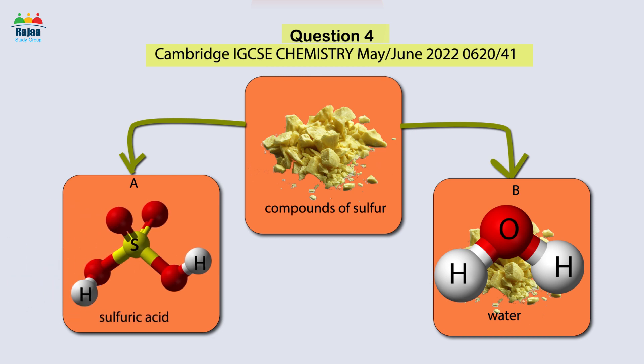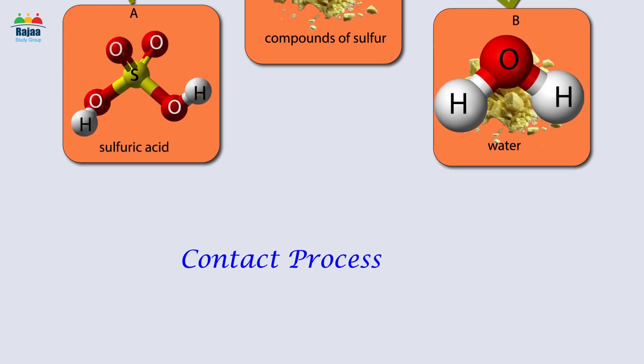Part A discussed sulfuric acid and how it is produced. To understand what goes on behind the scenes, sulfuric acid is manufactured in two ways: the lead chamber process and the contact process. In the IGCSE Chemistry curriculum, the notion of contact process is crucial.